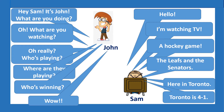Look at Sam's answers. Do his answers begin with yes or no? Do his answers give information? That's right — they give information. So, what kind of questions does John ask? That's right — information questions. He says: What are you doing? What are you watching? Who's playing? Where are they playing? And who's winning?